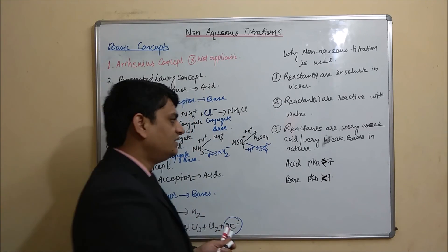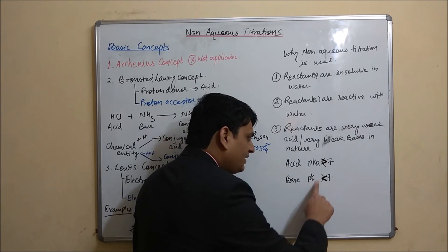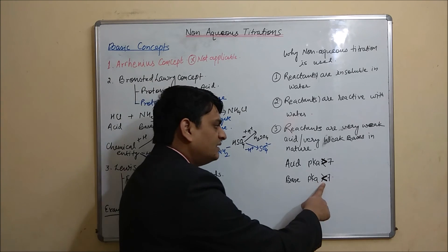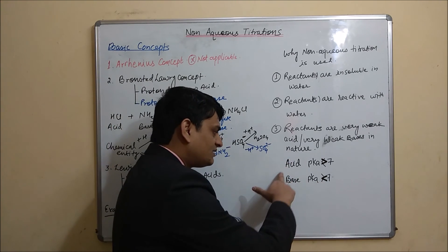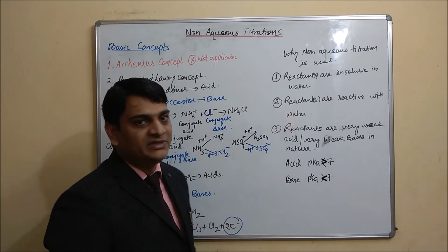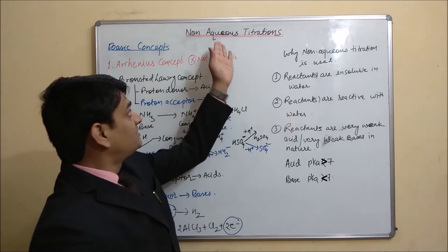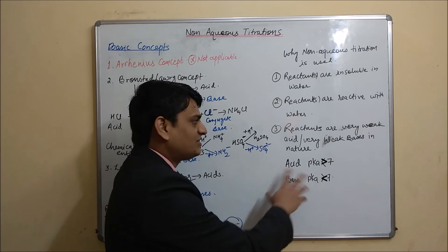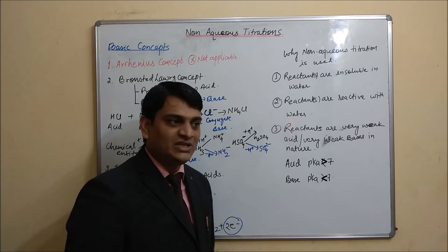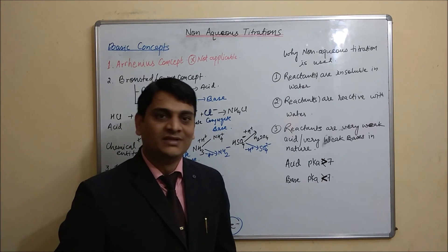If for any acid the pKa value is greater than 7, and if for a base the pKa value is less than 7, then these acids or bases are weak in nature and cannot be estimated by normal acid-base titration. So non-aqueous titration is required for the estimation of these weak acids and weak bases. In the next part of this video, I will discuss the solvents used in non-aqueous titration.